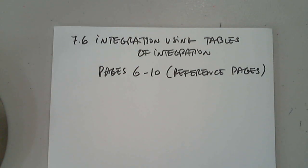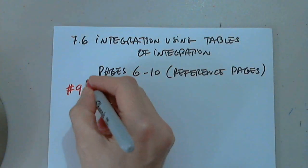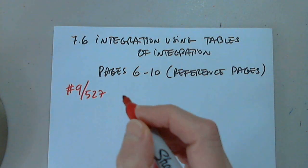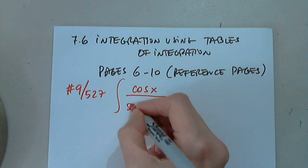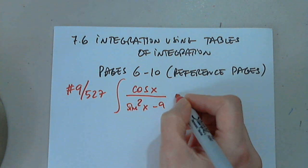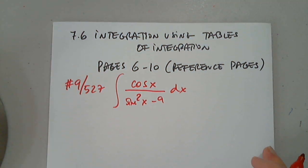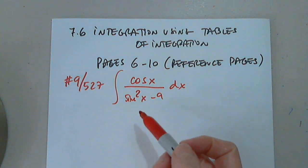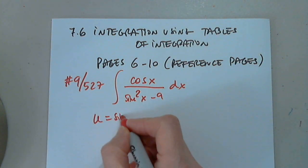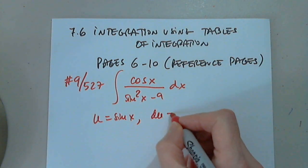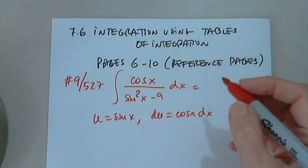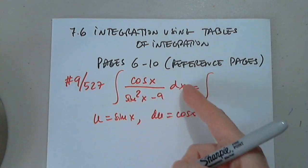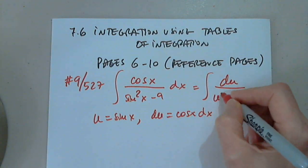Let's look at a couple of examples. Here's number 9 on page 527: the integral of cos(x) over (sin²x − 9) dx. This needs a substitution. Let u = sin(x), so du = cos(x) dx. Therefore the integral becomes: du over (u² − 9).